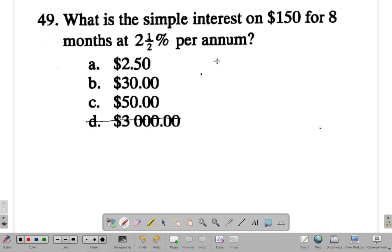2½ is 2.5 percent, divided by 100, multiplied by 150. Let's try and get rid of the decimal point to make it a little easier. Multiply the top by 10, multiply the bottom by 10 as well.